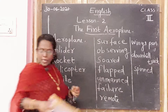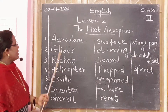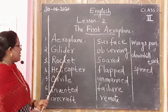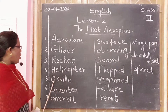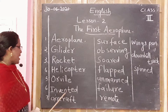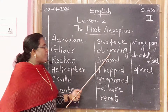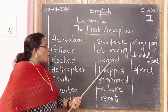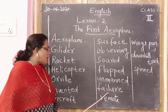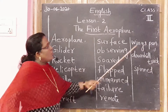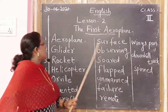Look at the board, children: aeroplane, glider, rocket, helicopter, invented, aircraft, surface, observing, soared, flat, unmanned, failure, remote, wingspan, downhill track, spinned.